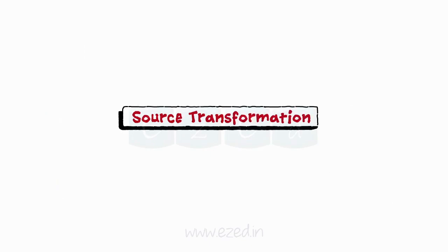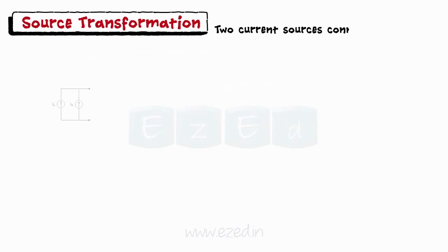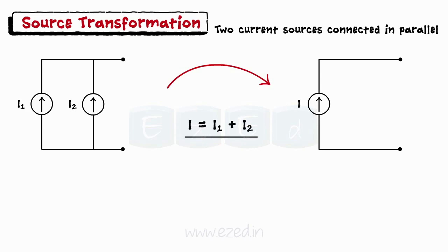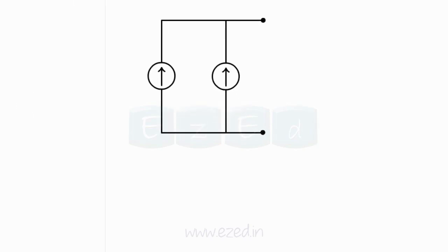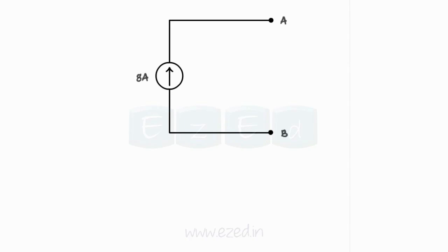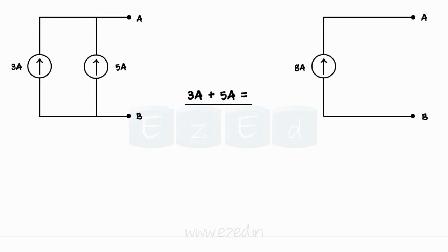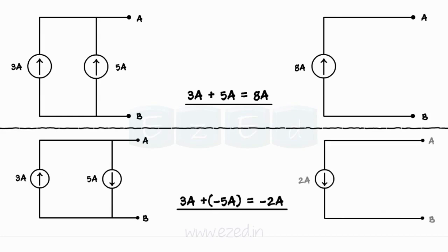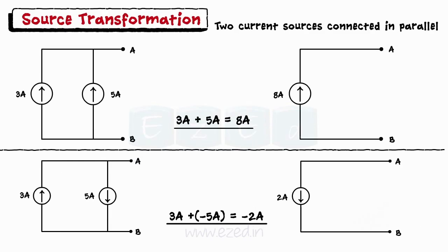Similarly, two current sources connected in parallel can be replaced by a single current source obtained by the algebraic addition of the magnitudes of the two sources. If the currents from both sources flow in the same direction, we simply add them — giving an equivalent of eight amperes for sources of three amperes and five amperes. If the directions are opposite, we subtract the magnitudes and assign the direction of the larger magnitude current to the equivalent source.